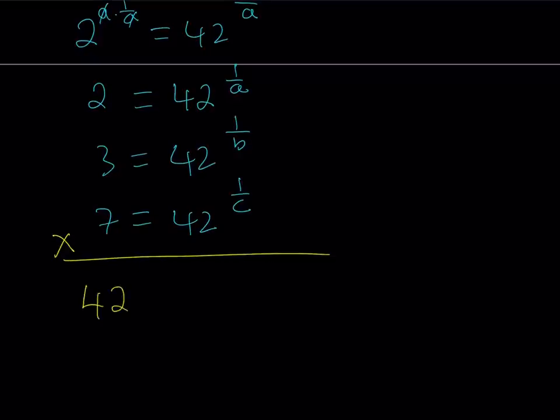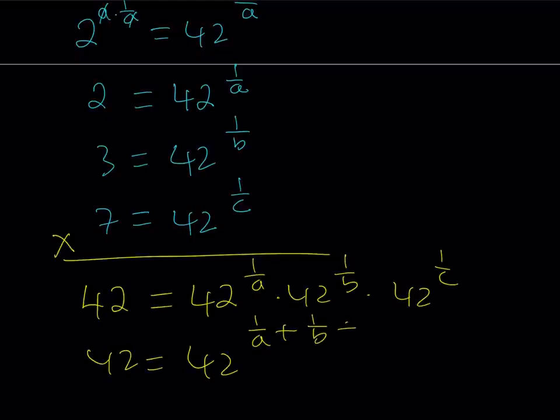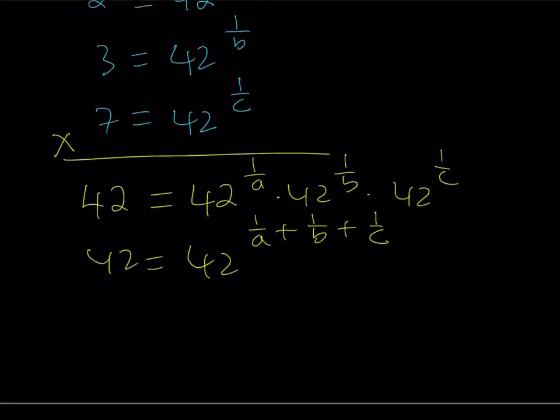So let's go ahead and do this. Multiply, you get 42. On the right-hand side, you get this times this times this. And as you know, it is the sum of the exponents. And now we've got a basic exponential equation.